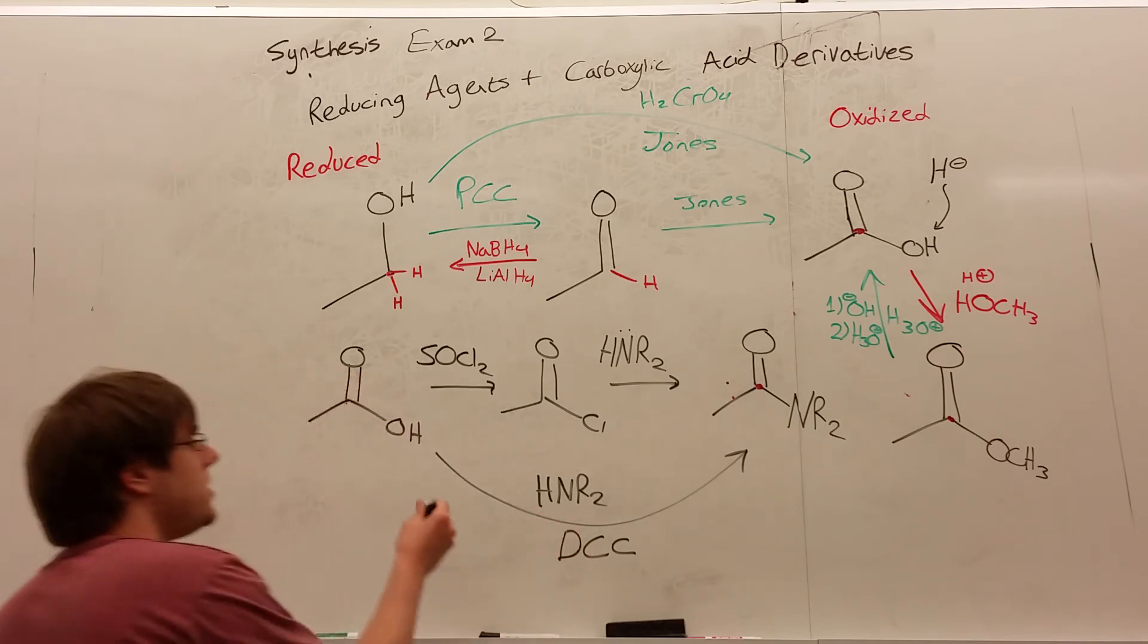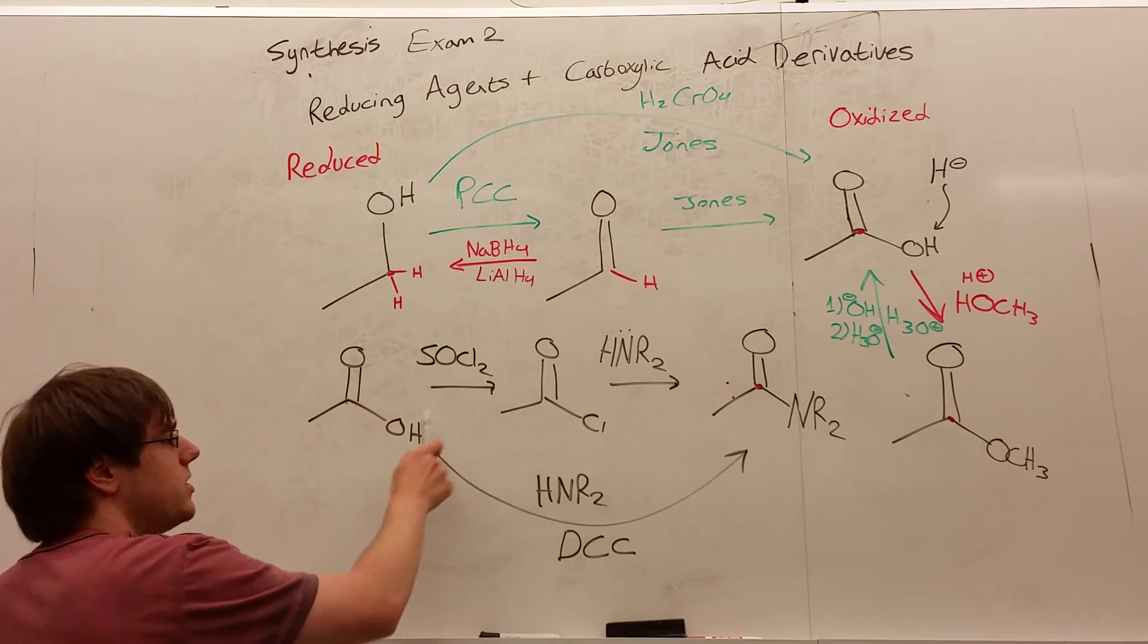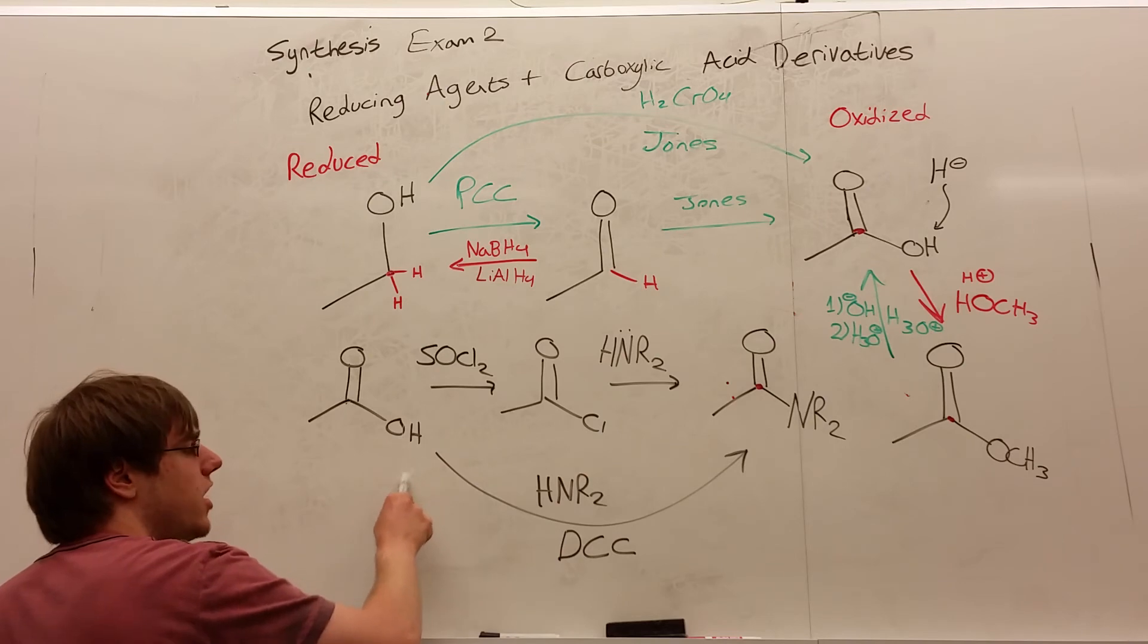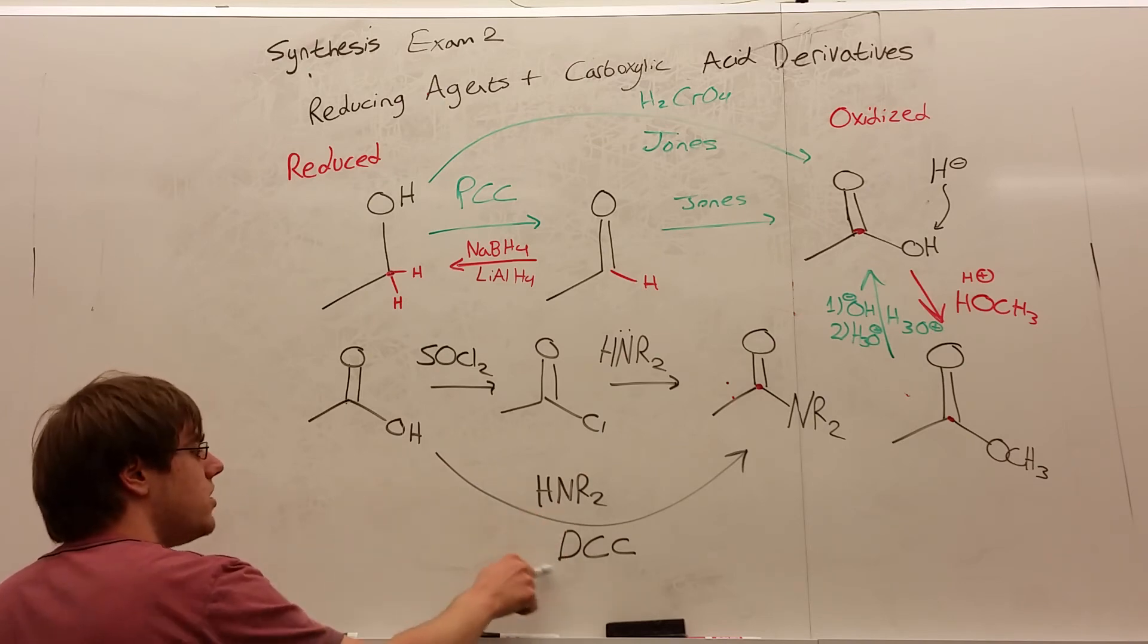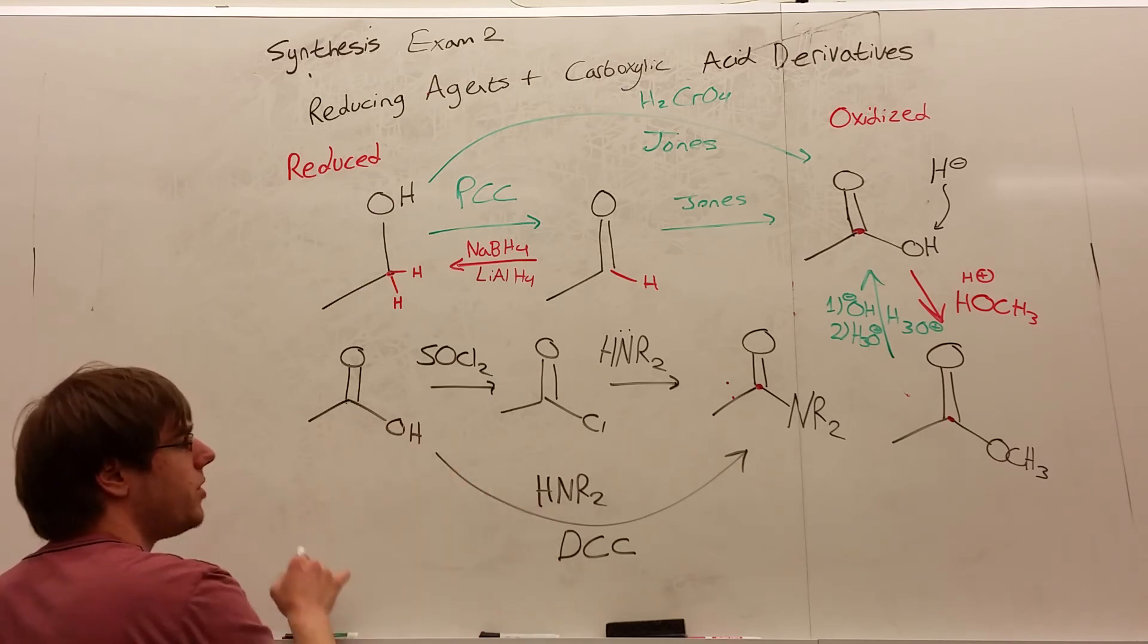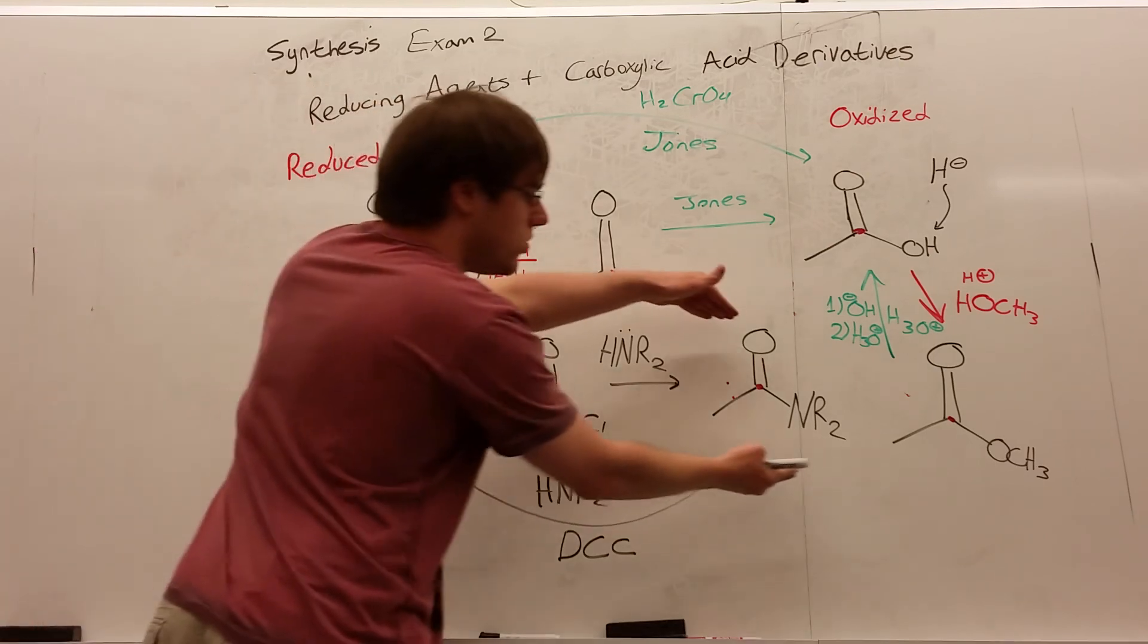You don't have to worry about the mechanism of DCC. All you need to know is that it basically kind of does this thing in the middle of the mechanism. It turns the OH into a good leaving group, and it makes this acidic proton not available, so it doesn't get deprotonated by the nitrogen. So again, all DCC does is it makes that OH want to leave, so the nitrogen can replace it. So these are two ways of turning a carboxylic acid into an amide.